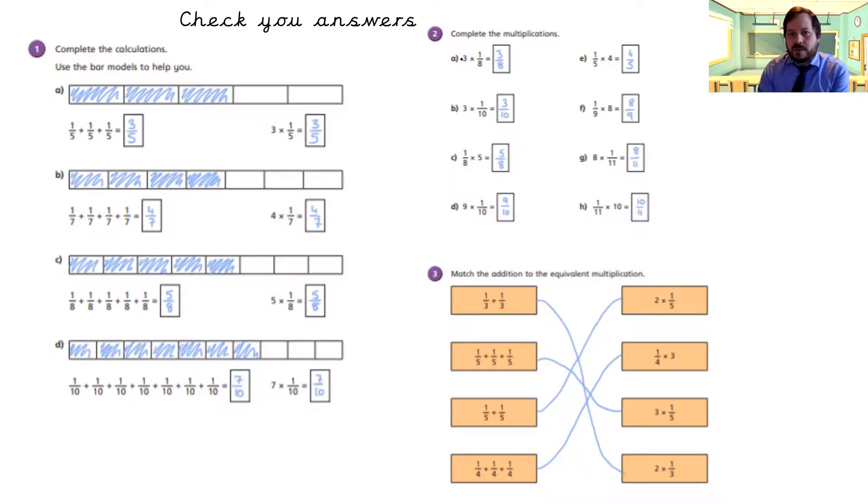And then complete the multiplication. So three times one-eighth. You just times the whole number, the integer, by the numerator. So three times one is three, still eight. It's still tenths. Three times one is three. One times five is five. The denominator stays the same. The denominator stays the same. Nine times one is nine. One times four is four. The denominator stays the same. One times eight is eight.